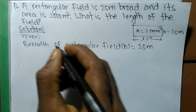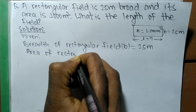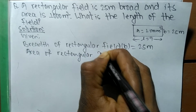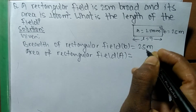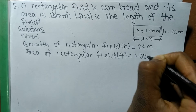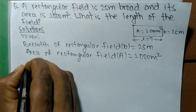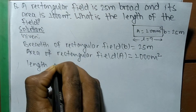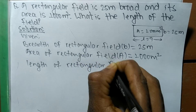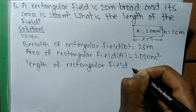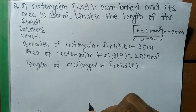Also, we have been given the area of the rectangular field. We denote area by A, which is equal to 1000 meter square. And we have to find out the length of the rectangular field, which we denote by l.